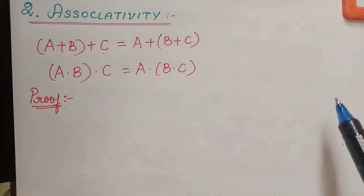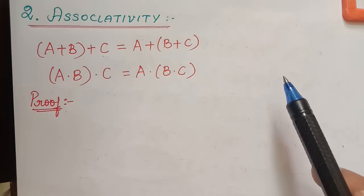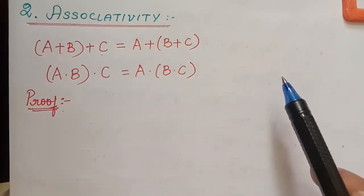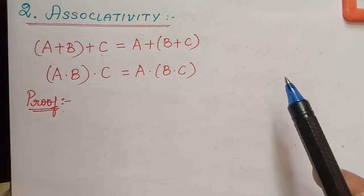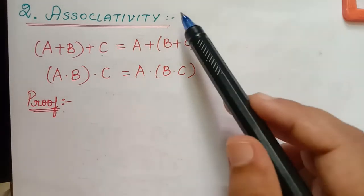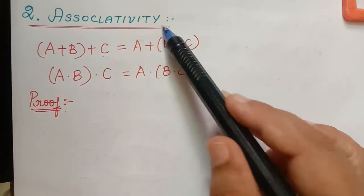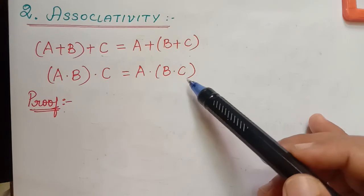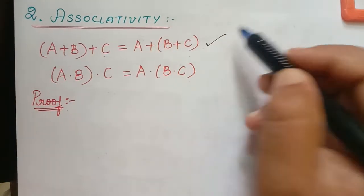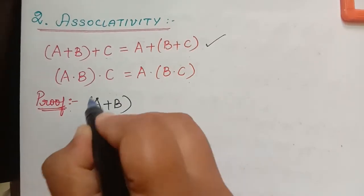This is a continuation of our previous video. In our previous video we proved that arithmetic operations on intervals are additively commutative and multiplicatively commutative. Now here we are going to prove that it is associative — additively associative and multiplicatively associative.